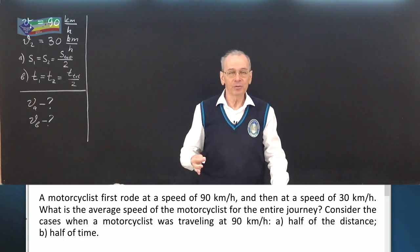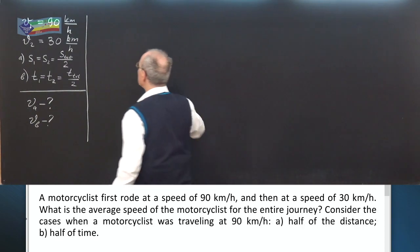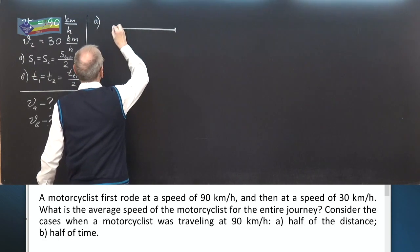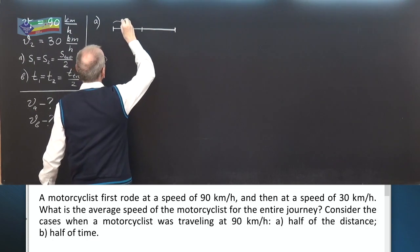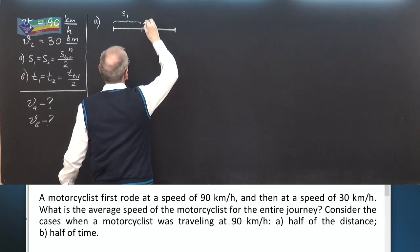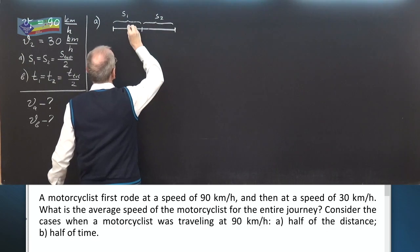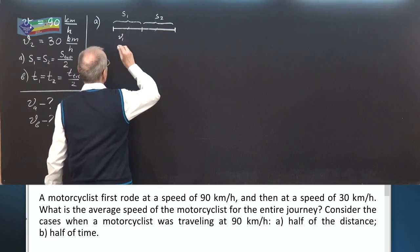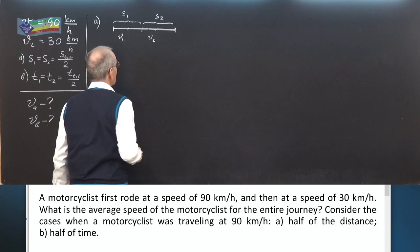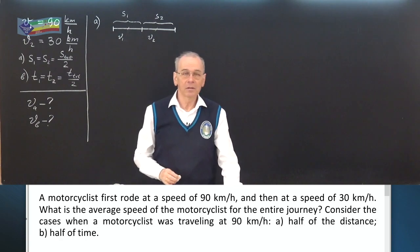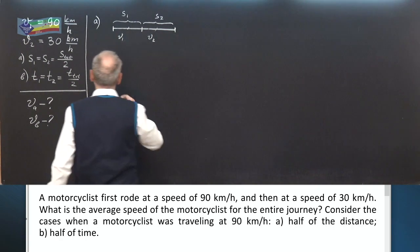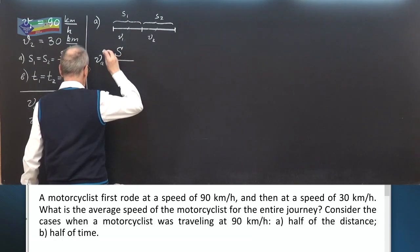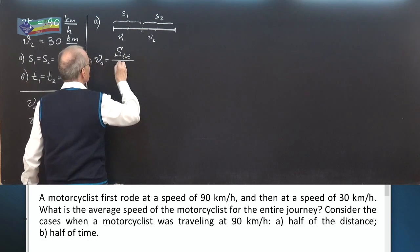We have two separate problems. Case A: the whole distance is divided into two parts of equal length, S1 and S2. These segments are of the same length, where S1 equals S2 equals S_total divided by 2. V1 is the speed for the first segment and V2 for the second. To find average speed, we divide total distance by total time.